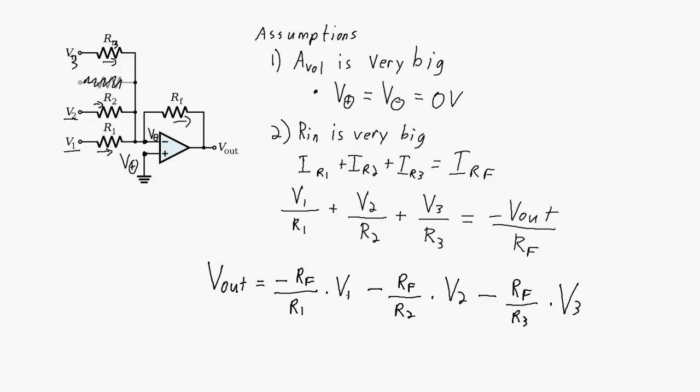Or in other words, we can factor out all the negative signs here and we'll get negative RF over R1 times V1 plus RF over R2 times V2 plus RF over R3 times V3.